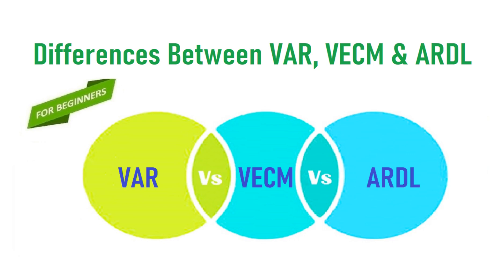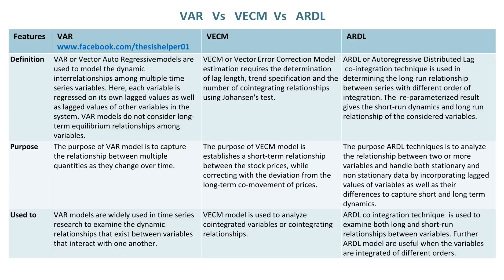Differences between VAR, VECM, and ARDL. VAR, or vector auto-regressive models, are used to model the dynamic interrelationships among multiple time series variables. Each variable is regressed on its own lagged values as well as lagged values of other variables in the system. VAR models do not consider long-term equilibrium relationships among variables.